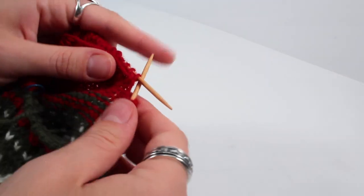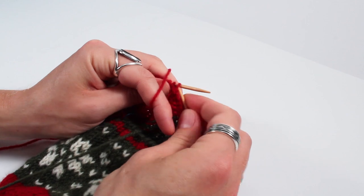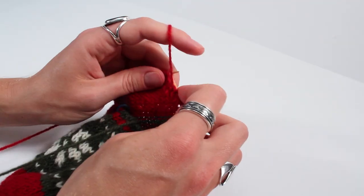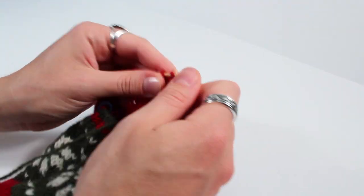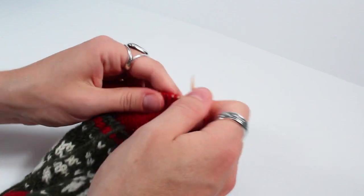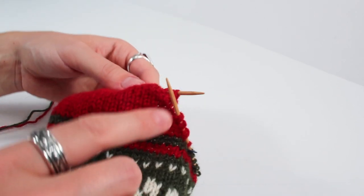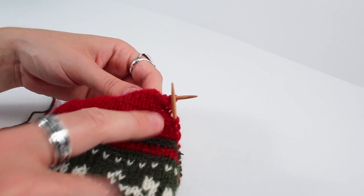Turning the work once again we're going to slip the first purl stitch and purl back across. Purling the double stitch when you get to it. And then you'll turn your work again. So you'll continue working your heel flat until you've worked all of the short row stitches.